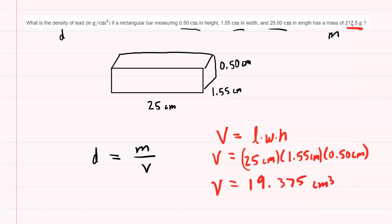So we'll take that volume and the given mass. We'll plug them in to the density equation, and we will have our answer. 217.5 grams divided by 19.375 centimeters cubed.